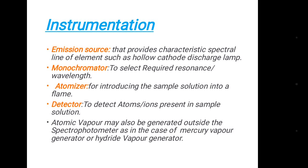Now, instrumentation. The emission source provides characteristic spectral lines of elements, such as the hollow cathode discharge lamp. A monochromator is used to select the required resonance wavelength. An atomizer is used for introducing the sample solution into a flame.